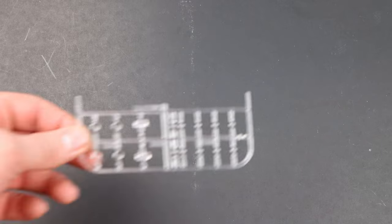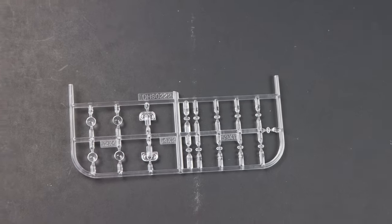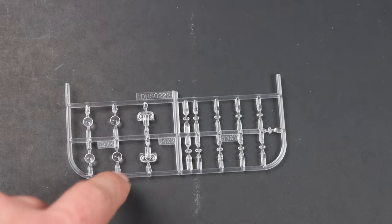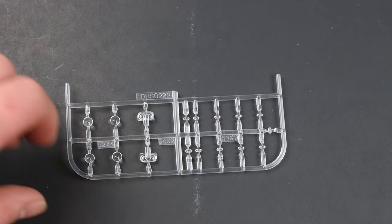Almost forgot a sprue. So, the final sprue. These are the clear parts. So, you've got lenses and then side markers and stuff like that. Nothing, nothing crazy.